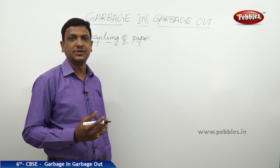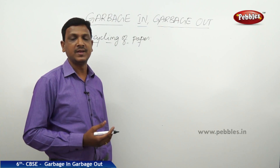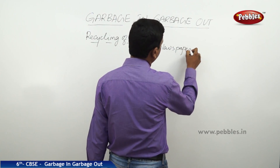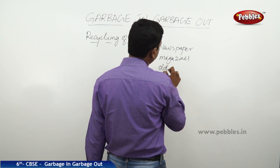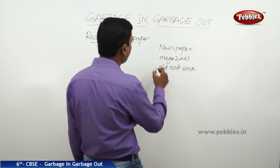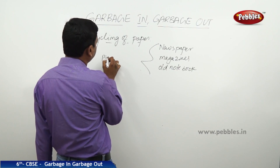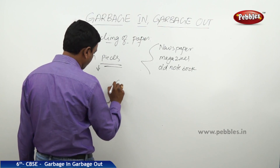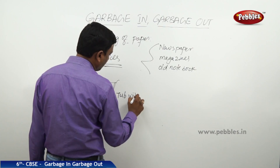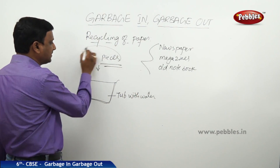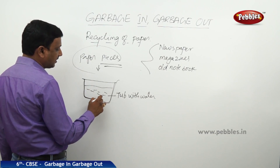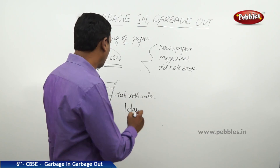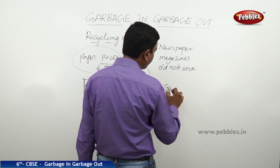You can convert waste items into useful items. Let's see how to recycle paper to make handmade paper. If you have paper bits from newspapers, magazines, and old notebooks, cut the paper into pieces. Keep all these paper pieces in a tub of water and allow them to soak for one day until they are soaked very well.